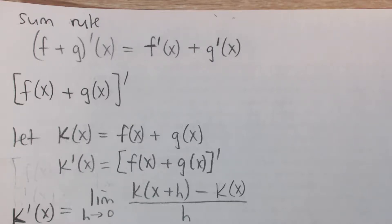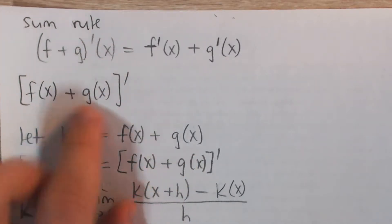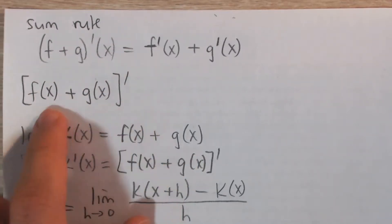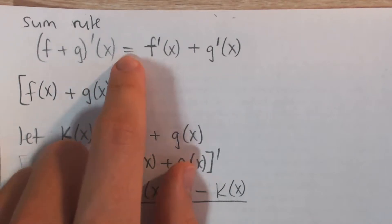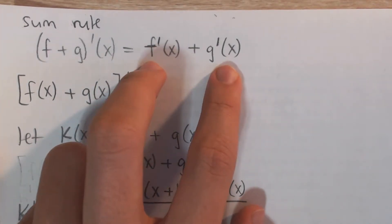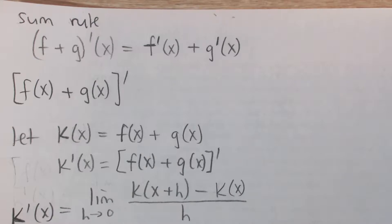Here I'm going to prove the sum rule for derivatives and also the difference rule for derivatives, which is very similar to the sum rule with a couple of minus signs switched around. The sum rule says that the derivative of a sum of two functions is equal to the sum of their individual derivatives. We can prove this using the limit definition for derivatives.